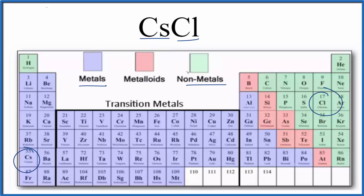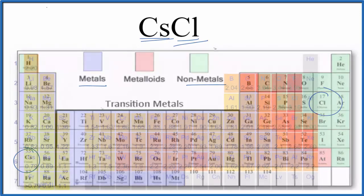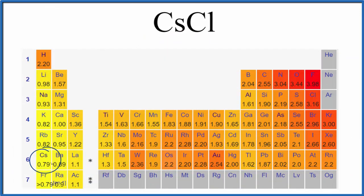Let's look at the difference in electronegativity between the cesium and the chloride. So cesium is 0.79 and chlorine is 3.16. So 3.16 minus 0.79 gives us a difference of 2.37. So that's the difference in electronegativity between cesium and chlorine.